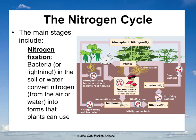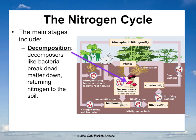The main stages of the nitrogen cycle: First, nitrogen fixation — bacteria or even lightning in the soil or water convert nitrogen from the air or water into forms that plants can use. Decomposition — decomposers like bacteria or fungi break down dead matter and return nitrogen to the soil. Ammonification — bacteria convert nitrogen from waste like urine and feces into ammonia specifically.